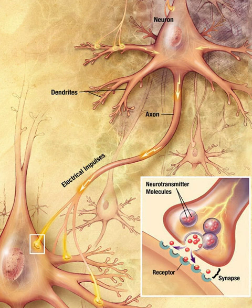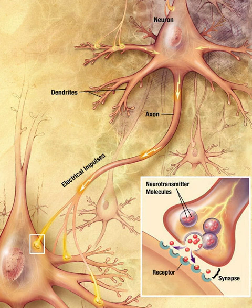Synapses are specialized junctions through which cells of the nervous system signal to one another and to non-neuronal cells such as muscles or glands. Synapses form the circuits in which the neurons of the central nervous system interconnect, and they provide the means through which the nervous system connects to and controls the other systems of the body. The word synapse comes from synaptein, which Sir Charles Scott Sherrington and his colleagues coined from the Greek syn meaning together and haptein meaning to clasp.